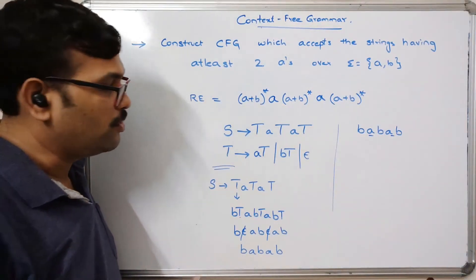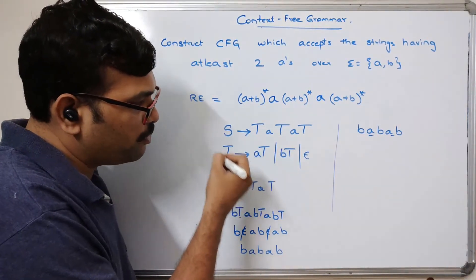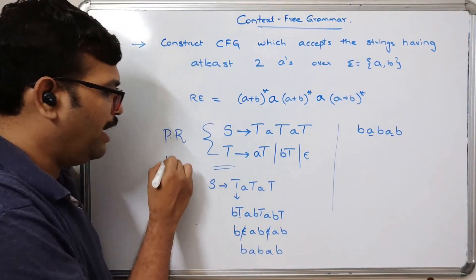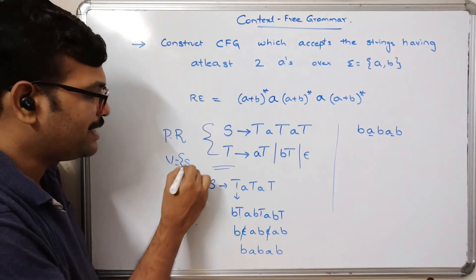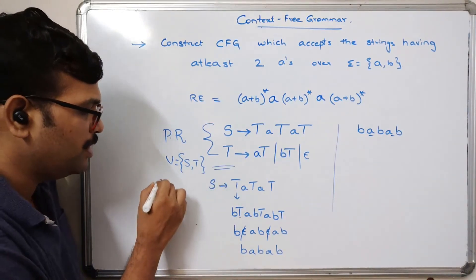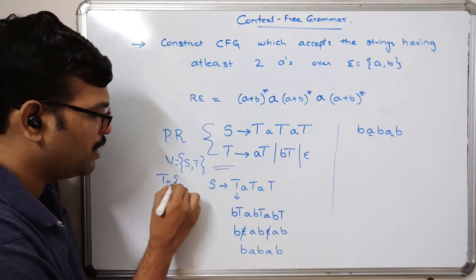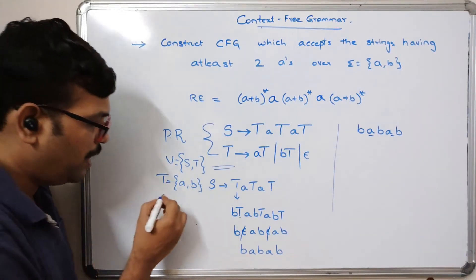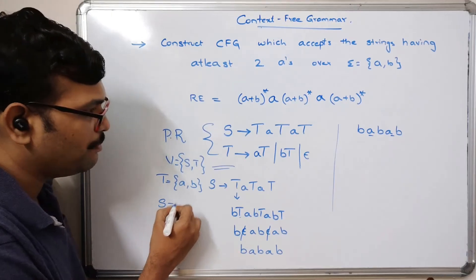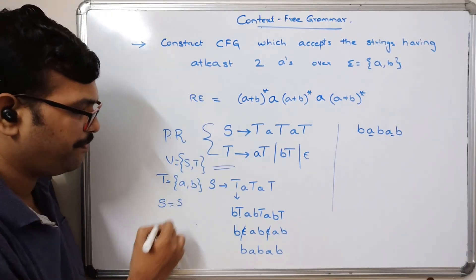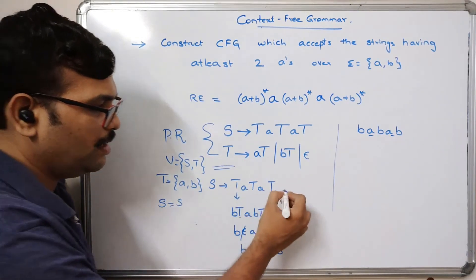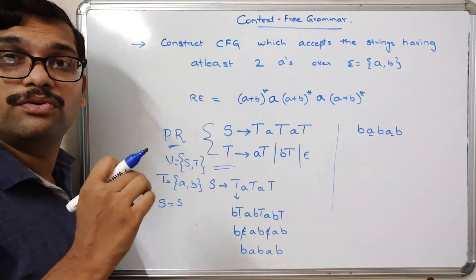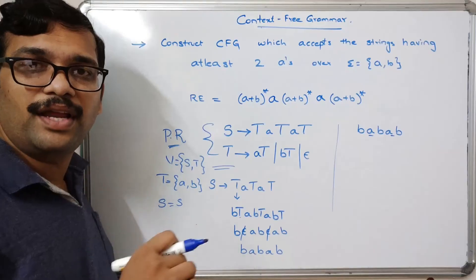These are the production rules. V is nothing but {S, T} which are the non-terminals. The terminal set T is {a, b} which are the symbols. S is the start symbol, and these production rules together form the complete context free grammar for this problem.